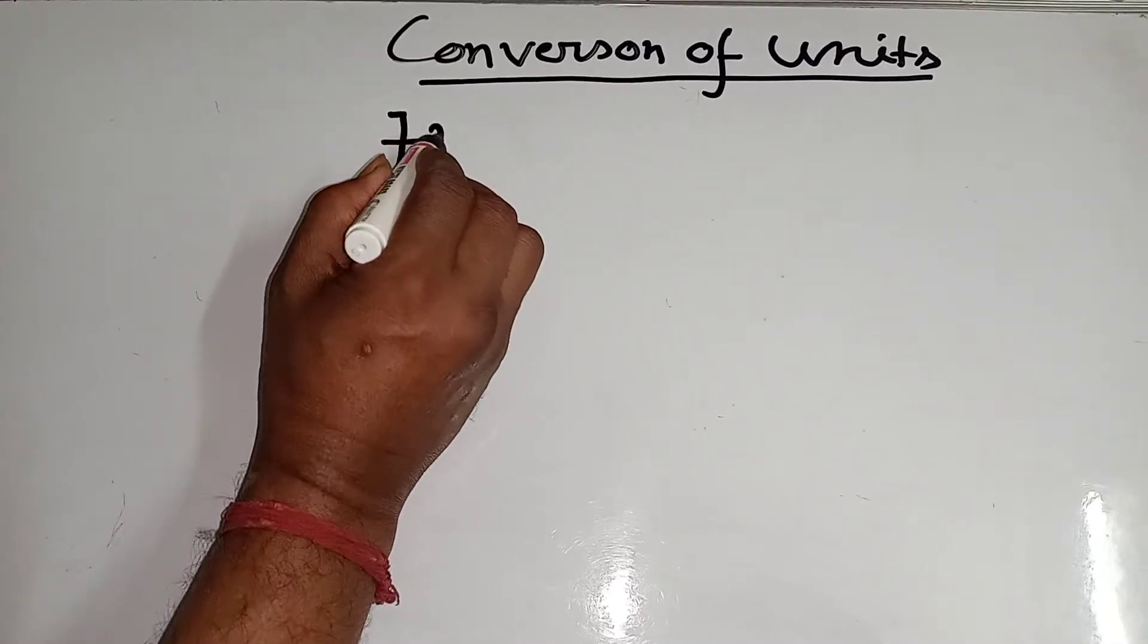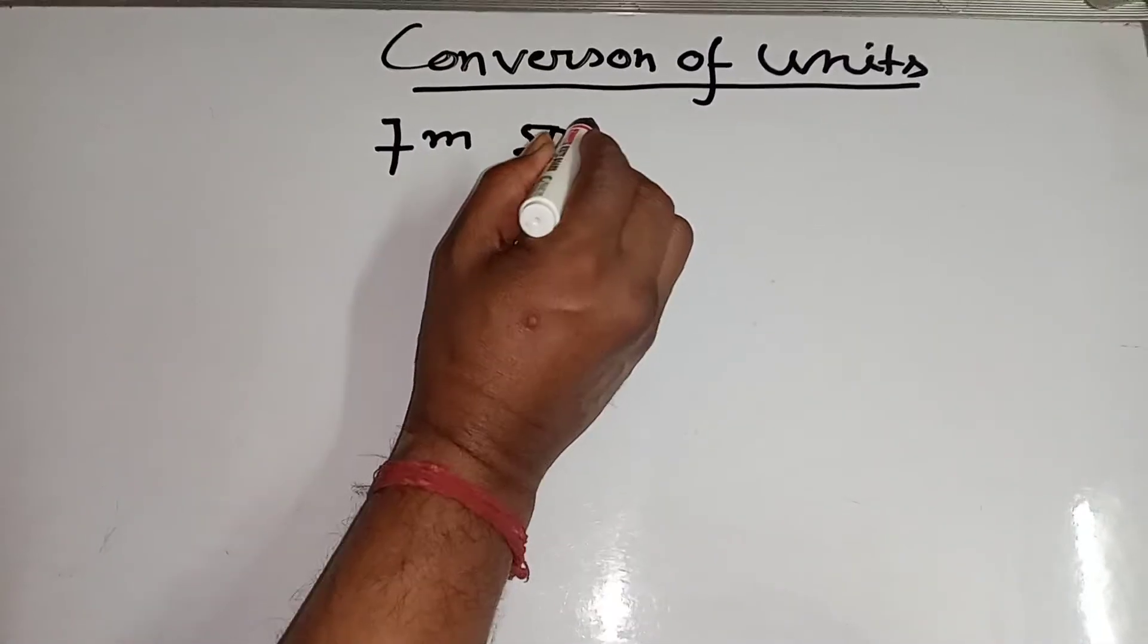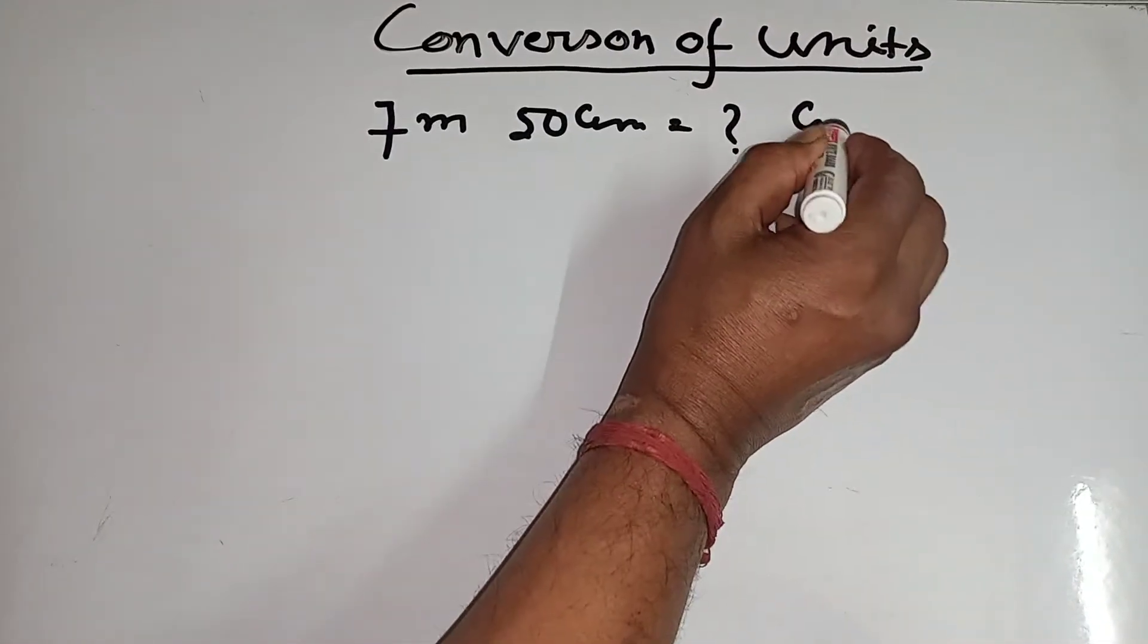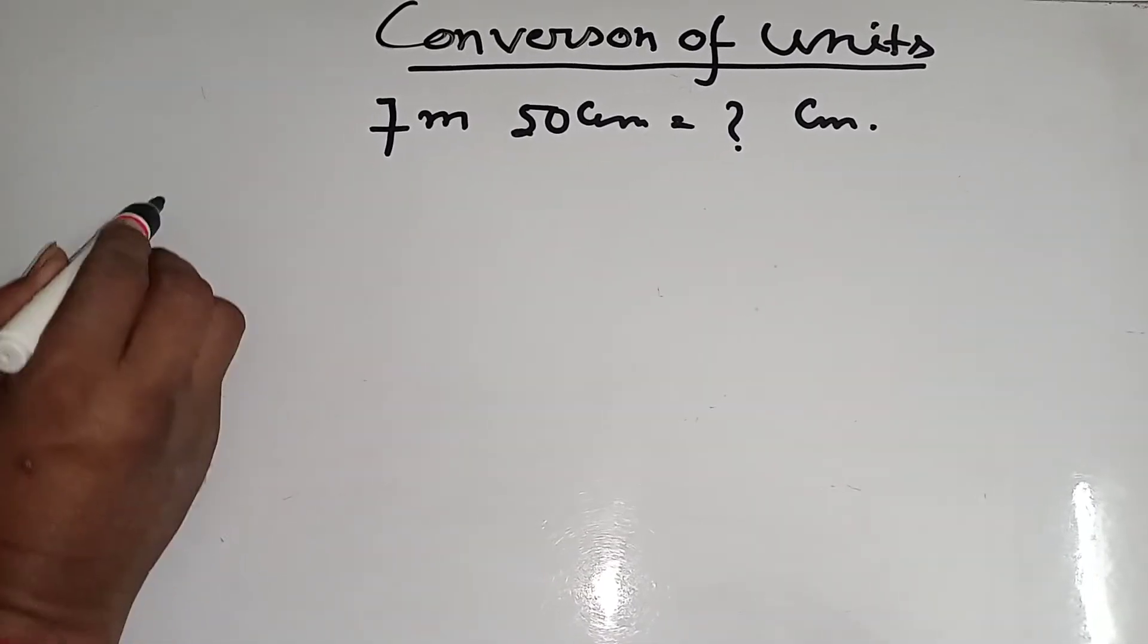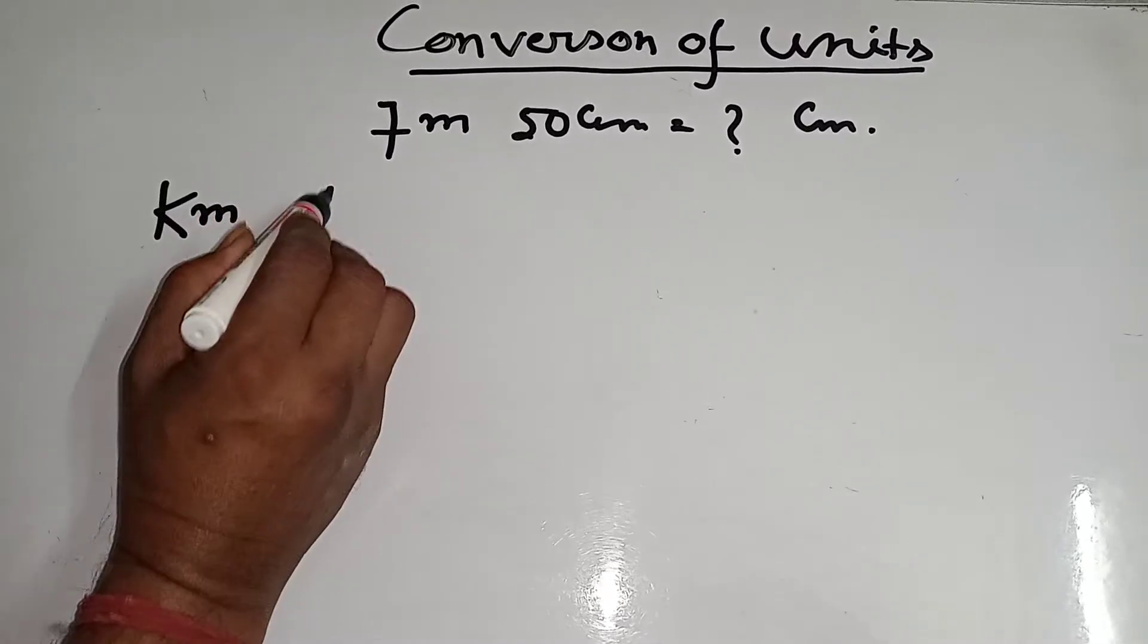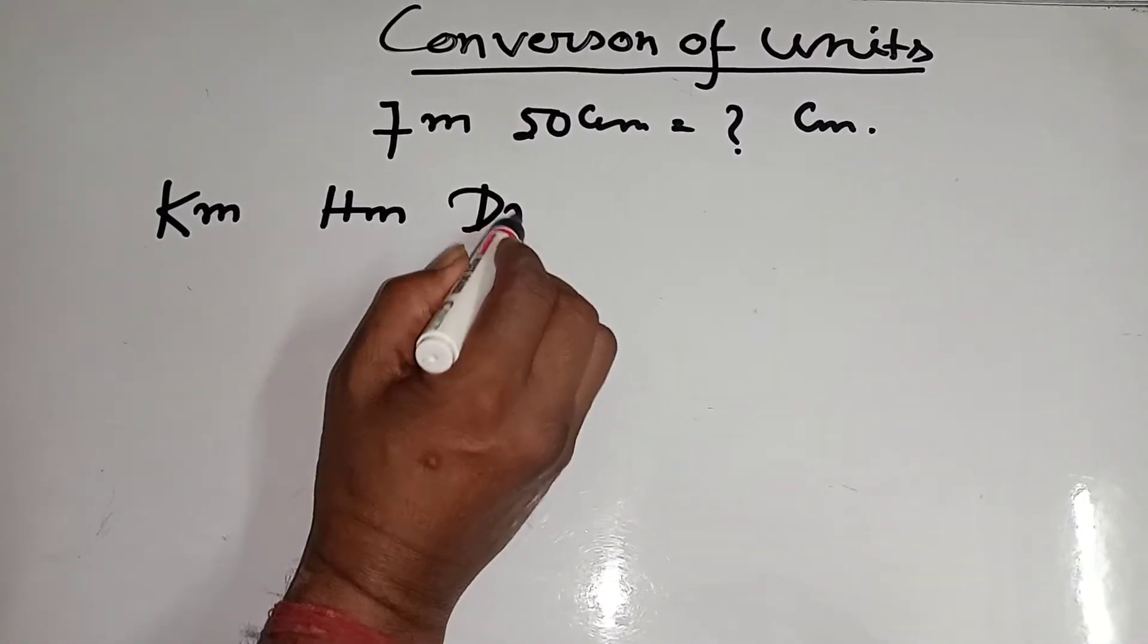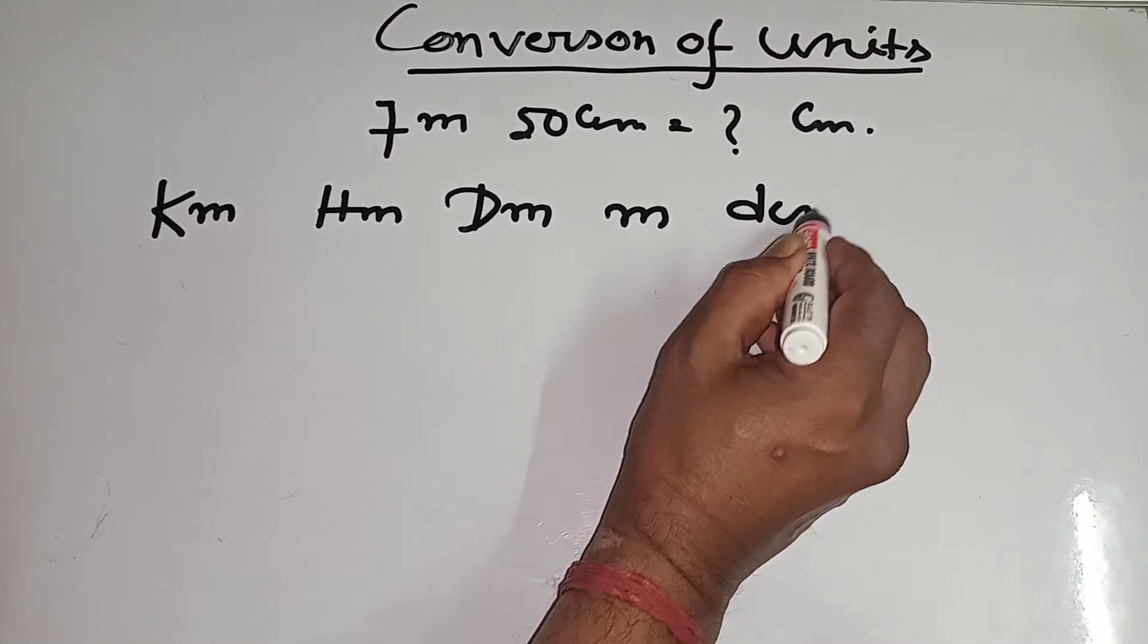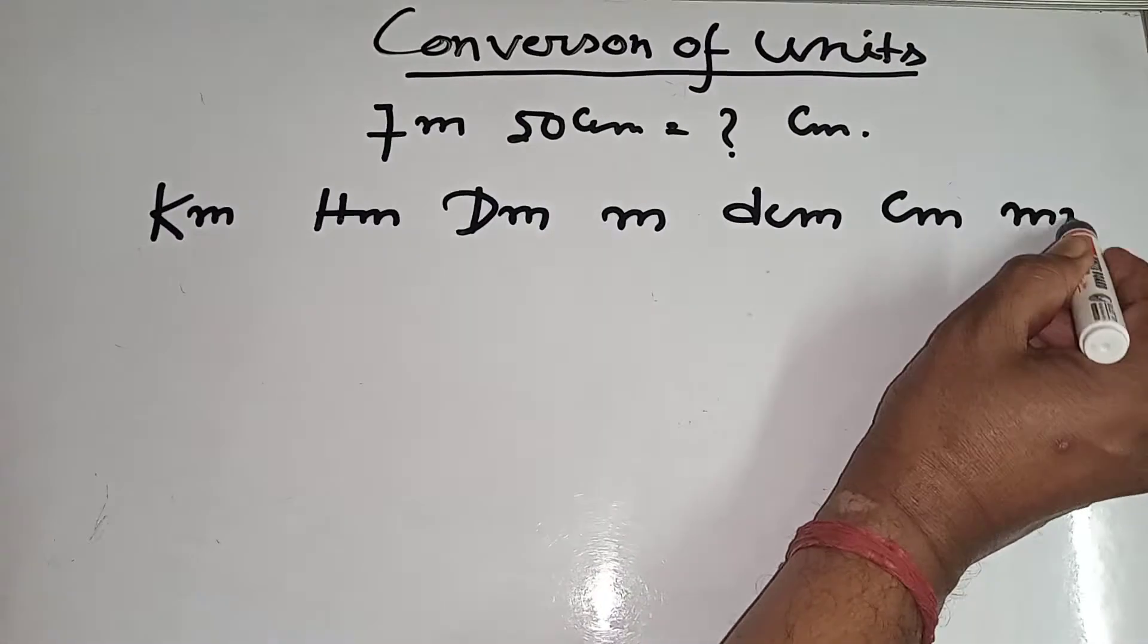7 meters 50 centimeters equal to how much centimeters? At first you remember this: one kilometer, hectometer, decameter, meter, decimeter, centimeters, millimeters.